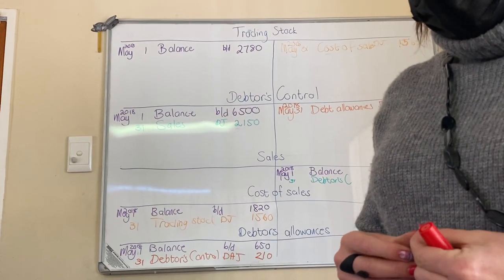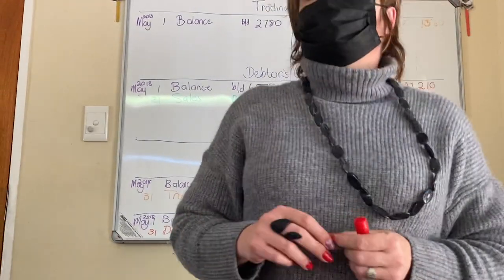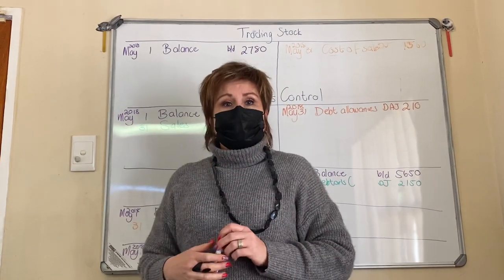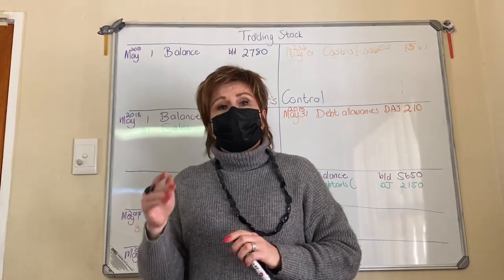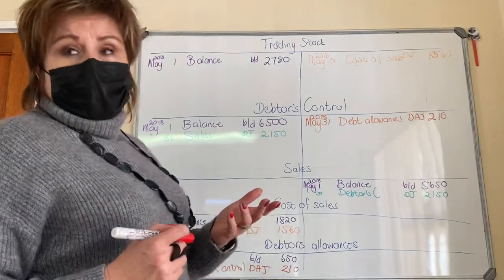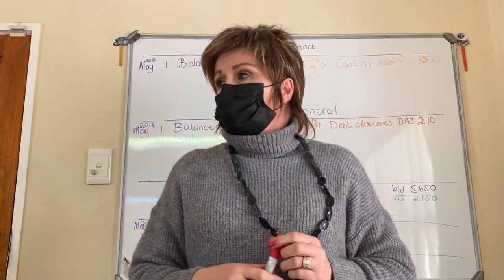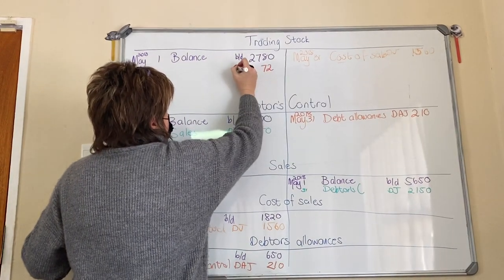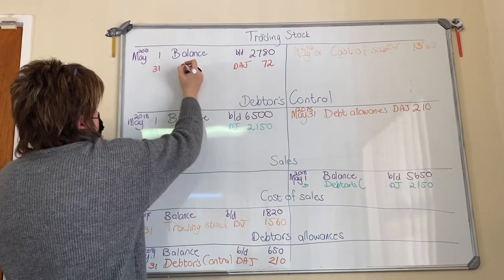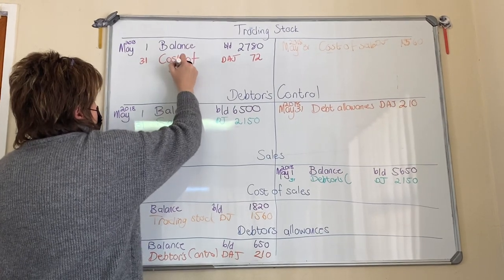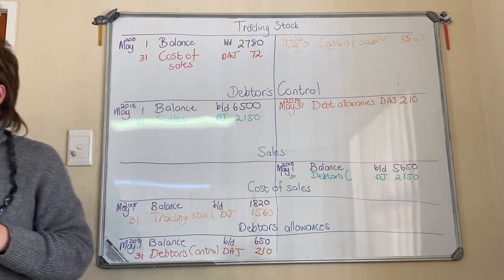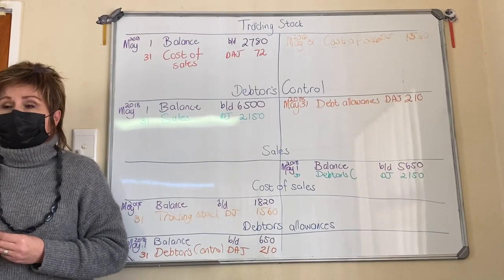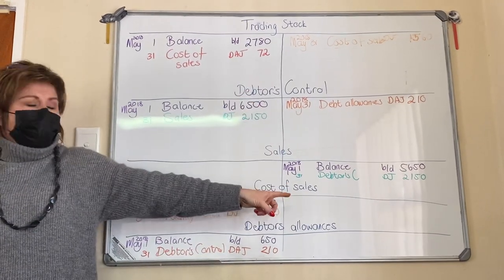It's important that you know which journal you're busy with — this is the debtors allowances journal. The cost of sales column tells me that's the value of the stock they sent back that they were unhappy with. We only put amounts in cost of sales for stock we can resell. This column tells me my trading stock is increasing — trading stock is an asset, assets increase on the debit side. So I go to the debit side of trading stock. The contra account is cost of sales.